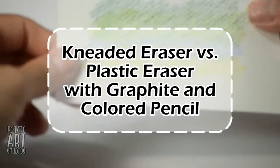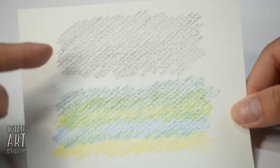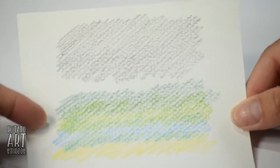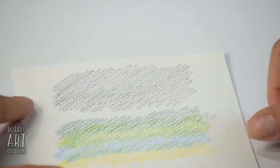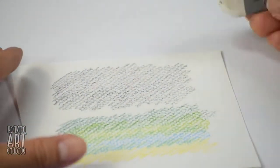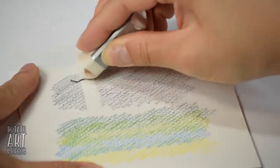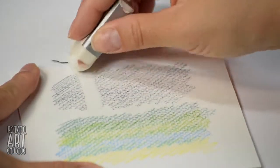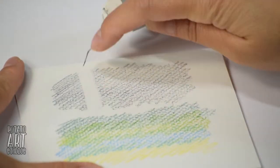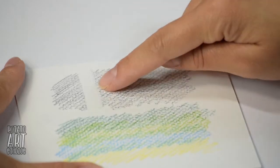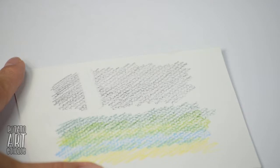So going back to the eraser, I have this little test sheet I prepared. This just has pencil on it and this is colored pencil. So comparing the two different erasers, you can see with a regular white plastic eraser, you can put a lot of pressure on it. And you get a little eraser shaving and the surface is pretty clean. I would say you erased 99% of the pencil.